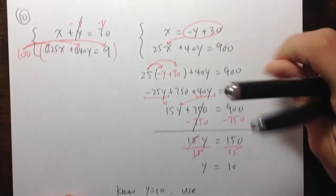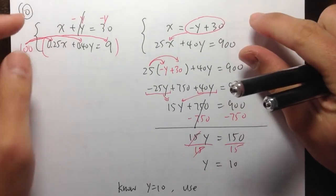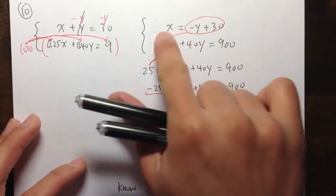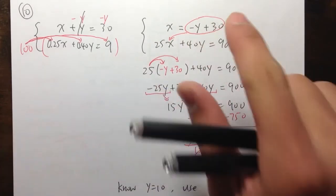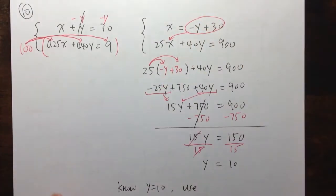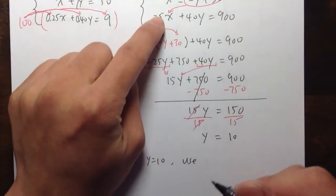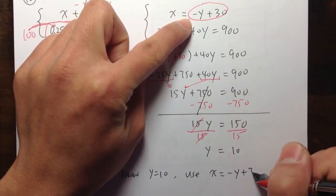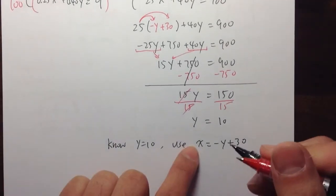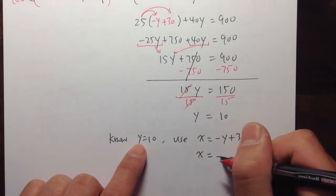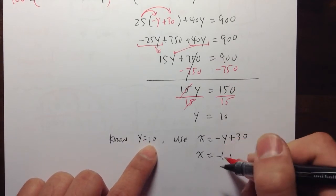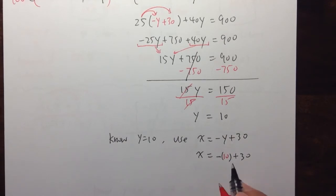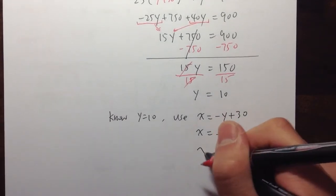So, now we know y is equal to 10. And then, you're going to look back to the equations that we have. Which one do you want to use? We know y is equal to 10. I'm actually going to just use this one where x is equal to negative y plus 30. I'm just going to plug in 10 into y right here. Use x is equal to negative y plus 30. So, I will get x is equal to negative 10 plus 30. Negative 10 plus 30 is 20. Here we go, x is equal to 20.